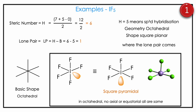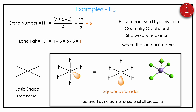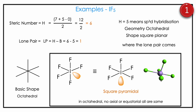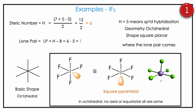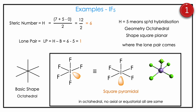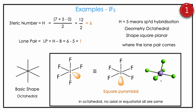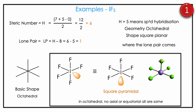Then IF5 — iodine is the central atom bonded with a halogen. Iodine valence is 7, bonded atoms are 5. H = (7 + 5 − 0) / 2 = 12 / 2 = 6. Lone pair = 6 − 5 = 1. H = 6 means sp3d2 hybridization and octahedral geometry. But in octahedral there is no distinction between axial and equatorial, so lone pair can come anywhere. With one lone pair not visible, the resulting shape is square pyramidal — four atoms on the plane and one atom above the plane. So the shape of IF5 is square pyramidal.